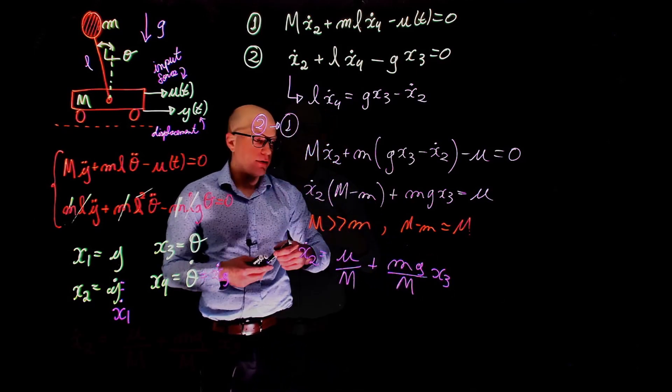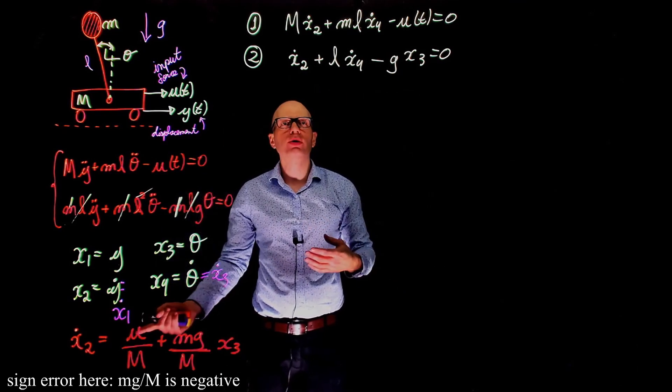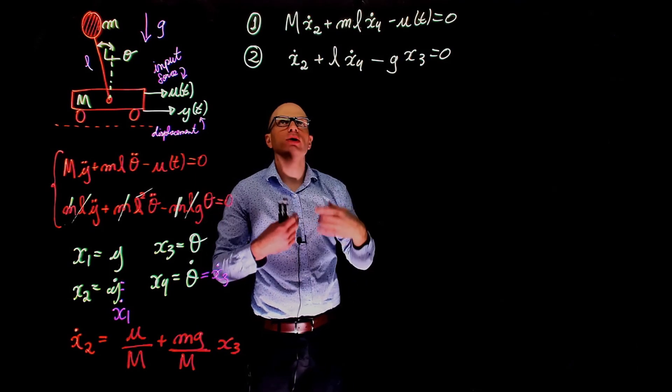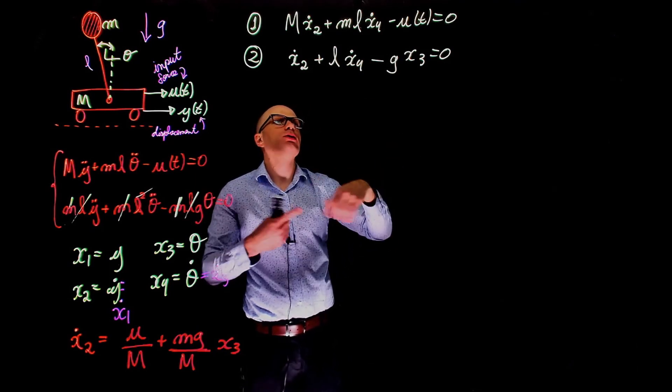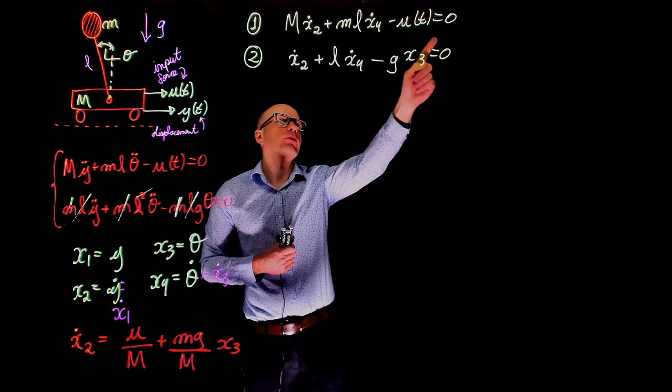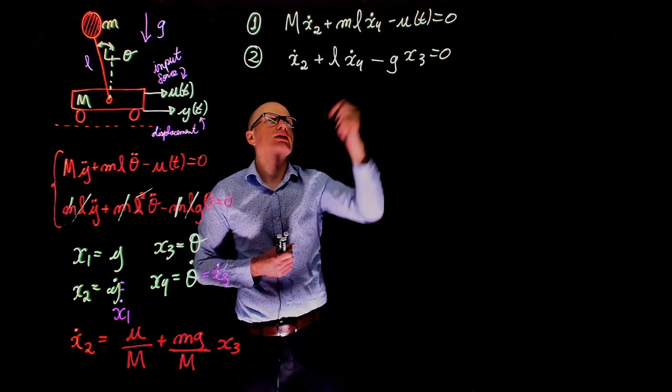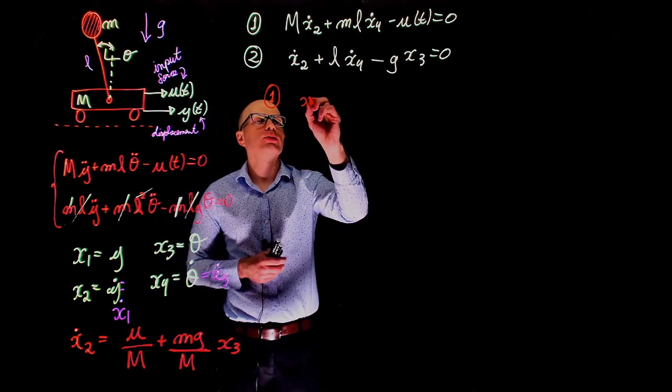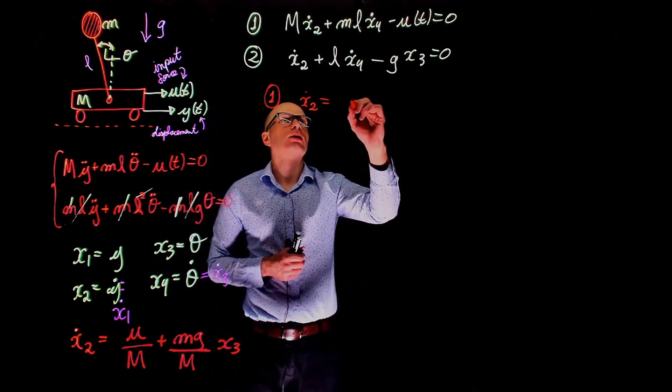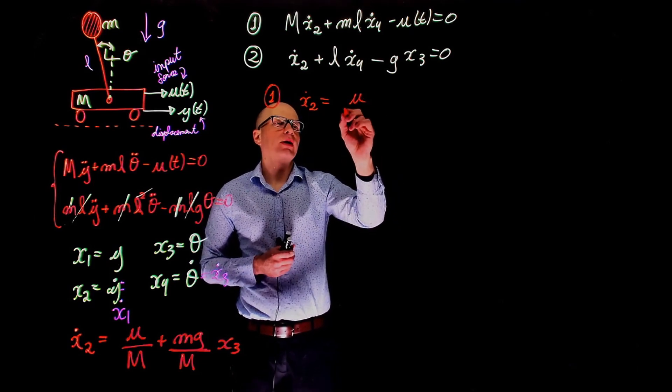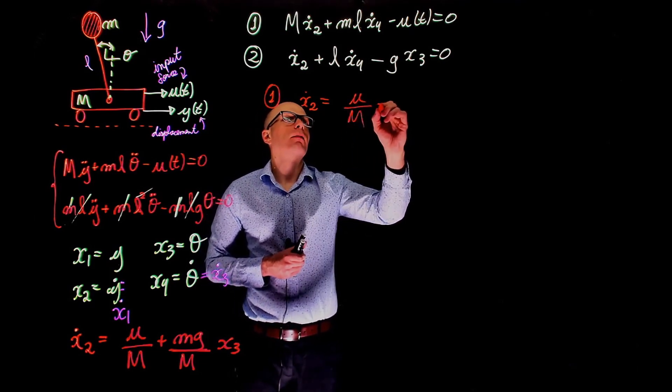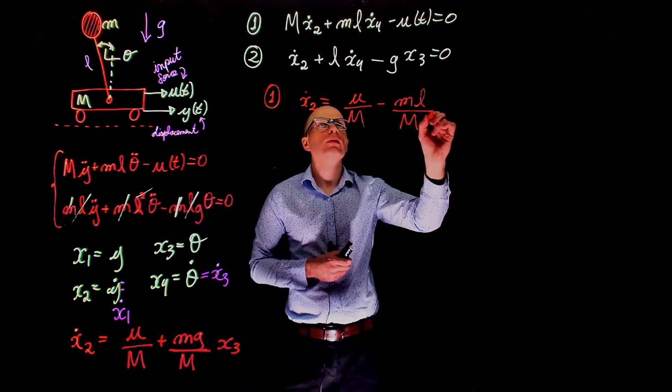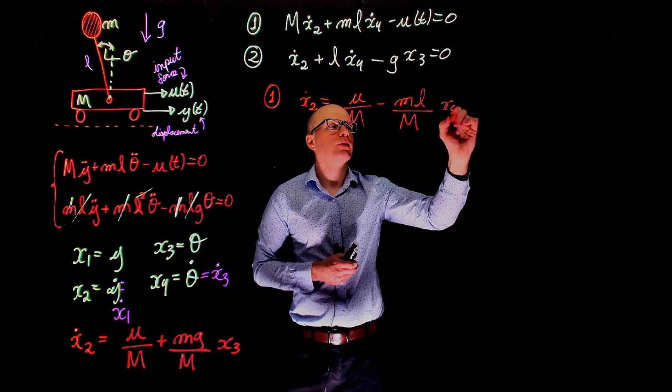So here is the first expression. All right, so to find x2 dot, we isolated for x4 dot and replaced that into the first equation. Now we are solving for x4 dot. Let's do the opposite. We take x2 from the first equation and replace that into the second equation. So from equation one, we get x2 dot as u divided by m minus ml over m times x4 dot.